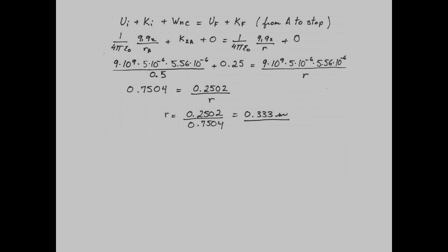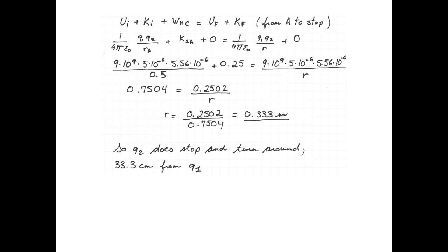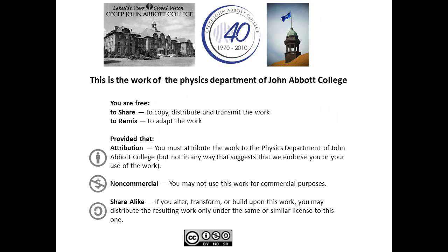Now, if R had turned out to be a negative number, then we would have known that q2 does smash into q1. But this time, we do have an answer. q2 stops and turns around 33.3 centimeters from q1. All done. Spread the joy of physics.